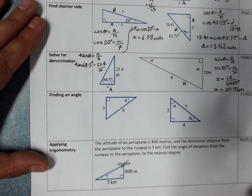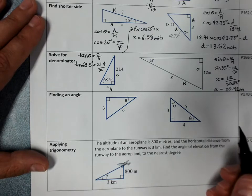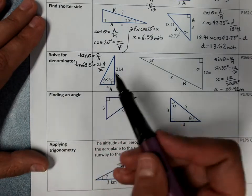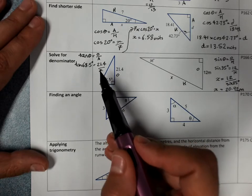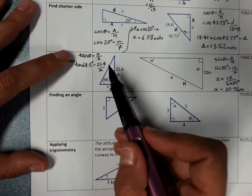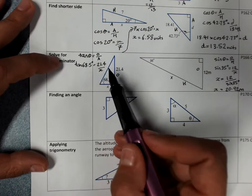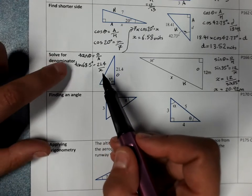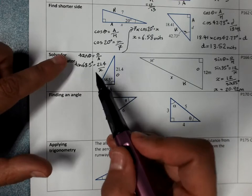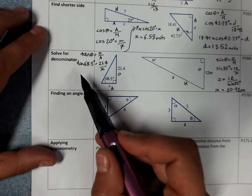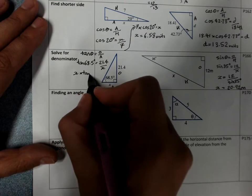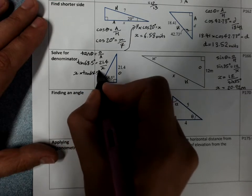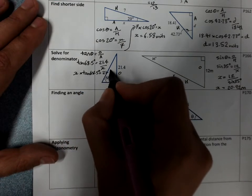Substitute our values. And we see that x has ended up on the bottom again. What we're going to do, the other way of thinking about this, which is more mathematically correct. I need to get x back up to the top line. I can't do anything while I've got to divide by x here. The only way to do that is to multiply by x on both sides. Which will cancel this x out and leave me with x times tan 68.5 degrees equals 21.4.